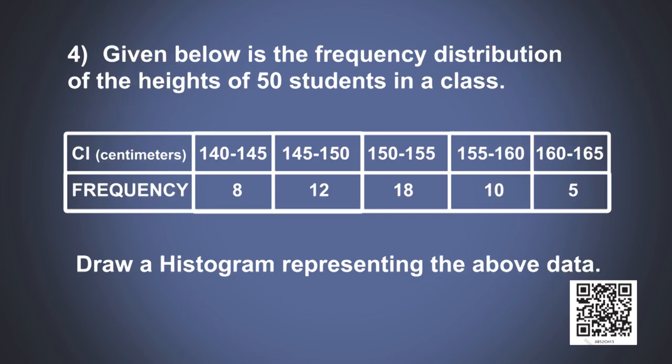Problem number 4. Given below is the frequency distribution of the heights of 50 students in a class. The class intervals represent the heights of students and frequency represents number of students: 140 to 145 is 8 students, 145 to 150 is 12 students, 150 to 155 is 18 students, 155 to 160 is 10 students, and 160 to 165 is 5 students. Draw a histogram representing the above data.